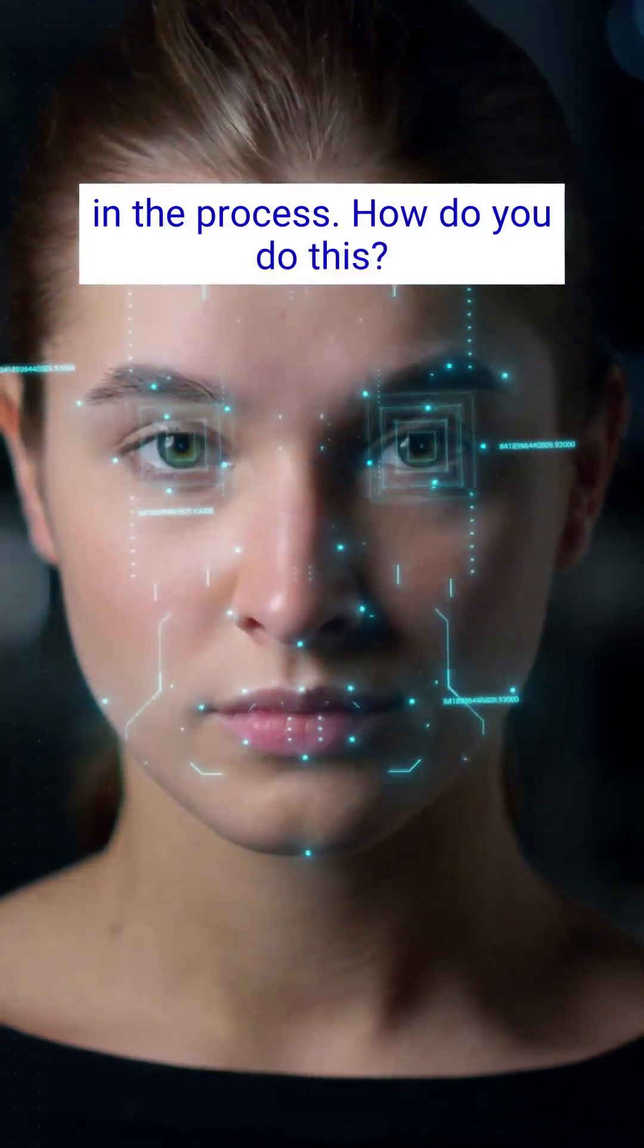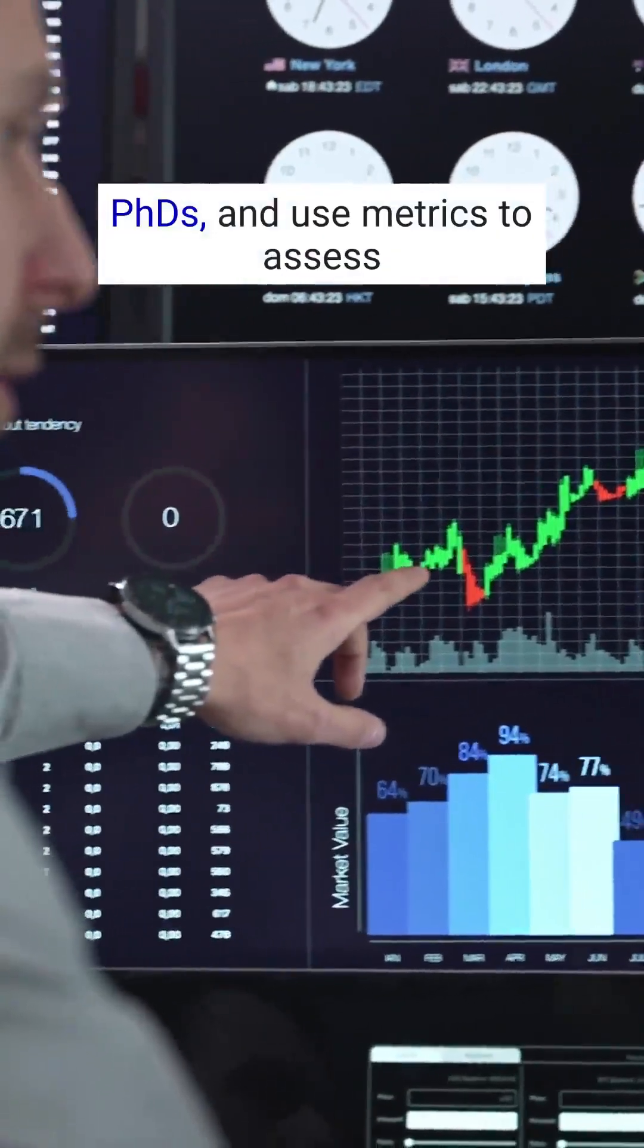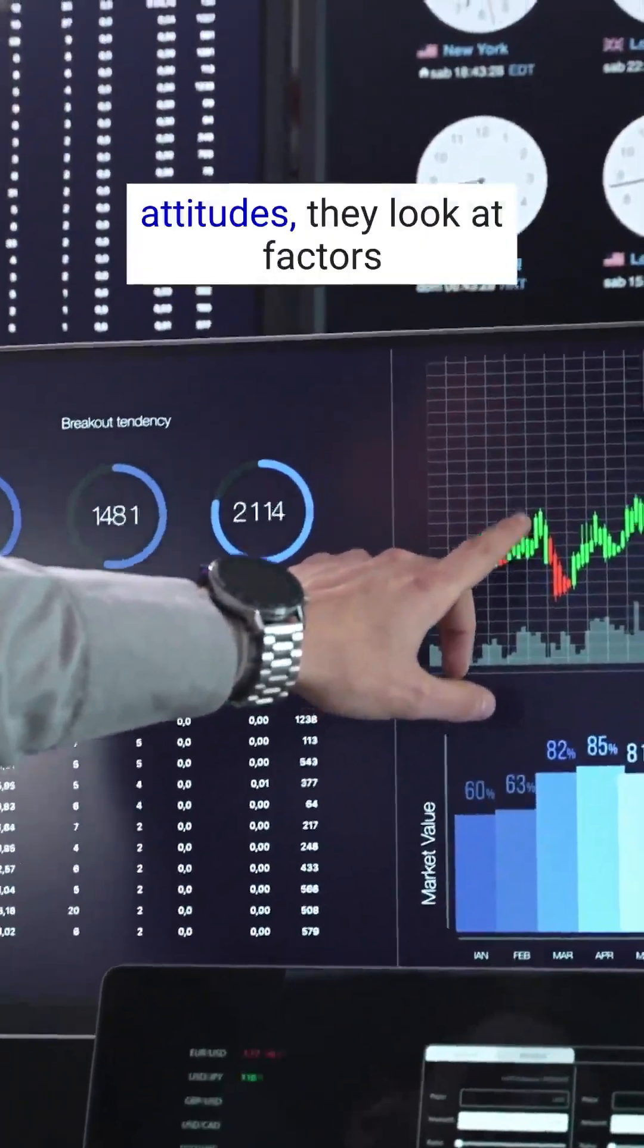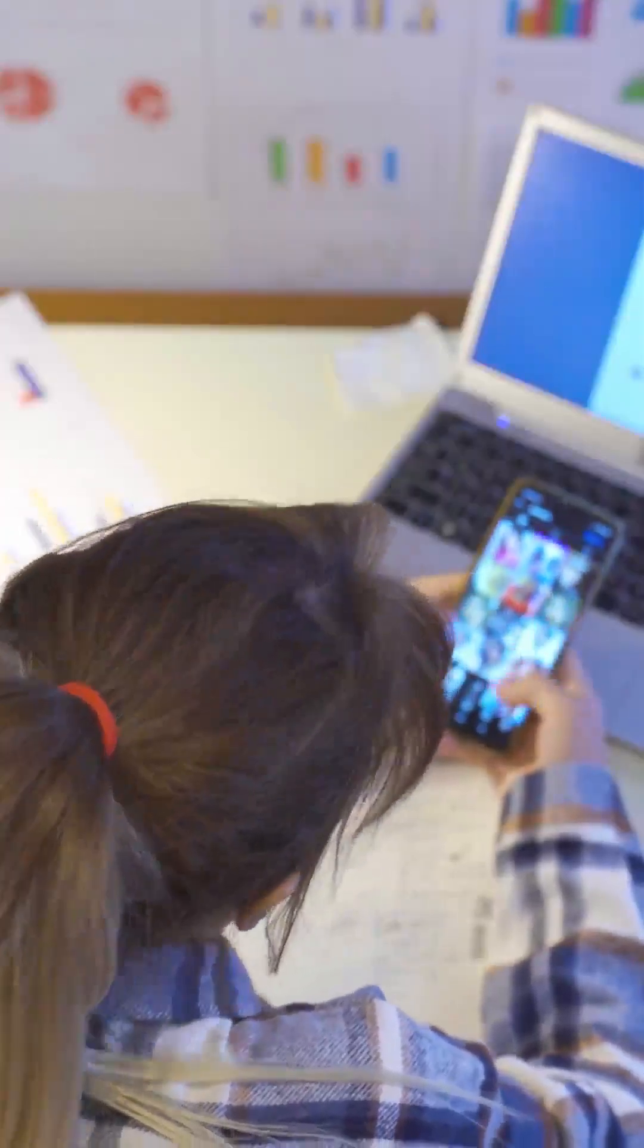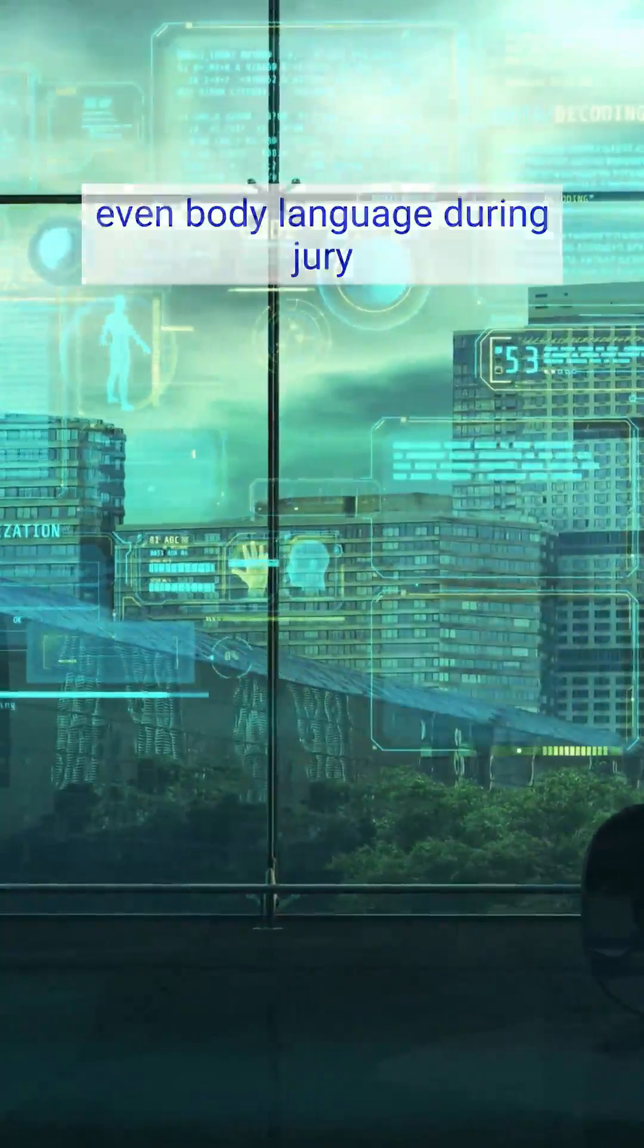How do you do this? Our staff of behavioral scientists and PhDs use metrics to assess attitudes. They look at factors like social media activity, personal background, and even body language during jury selection.